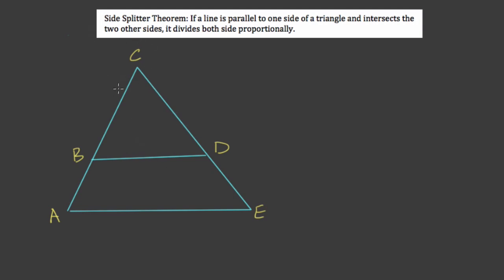If you have a diagram like this, two triangles set up one inside the other, so here we have triangle ACE, the larger triangle, and inside BCD.